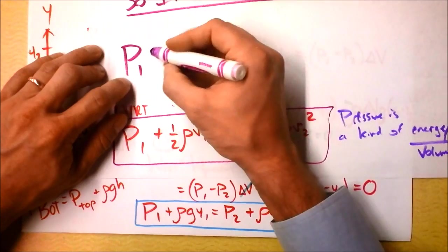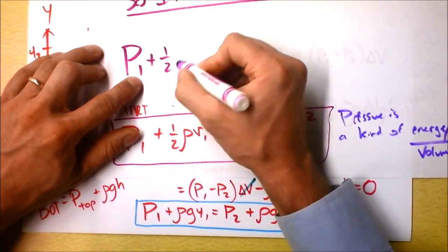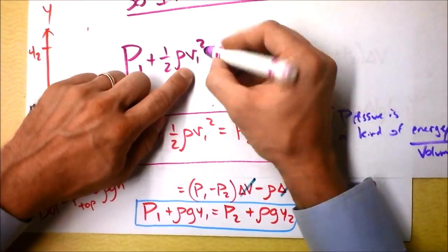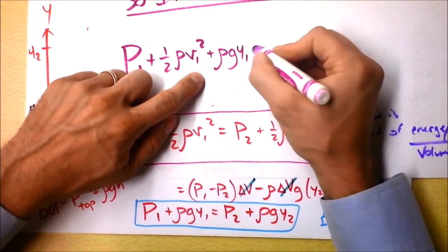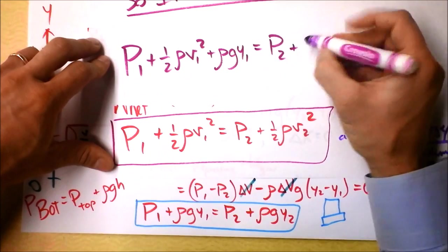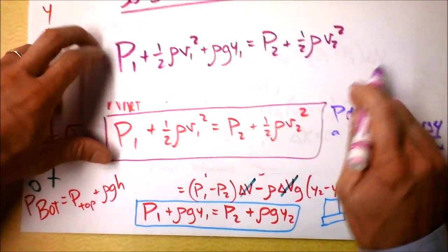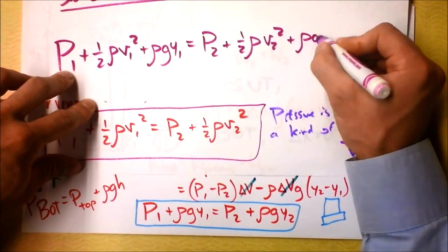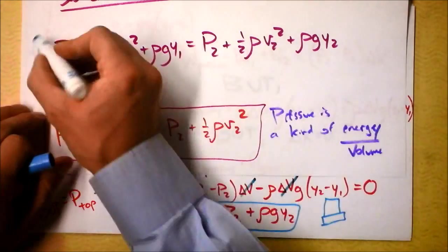Alright, so I'm going to put this in summary, one equation to rule them all. I'm going to have P1 plus one half rho times V1 squared, that's the speed, plus rho times g times y1 equals P2 plus one half rho times V2 squared plus rho times g times y2. This is Bernoulli's equation.